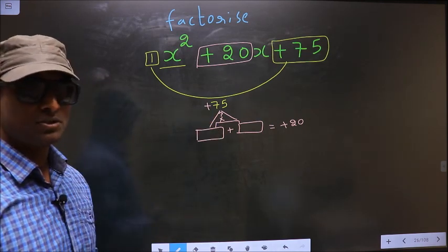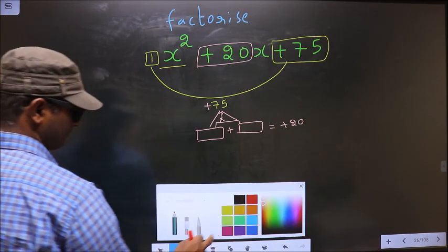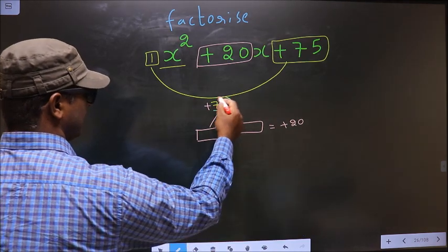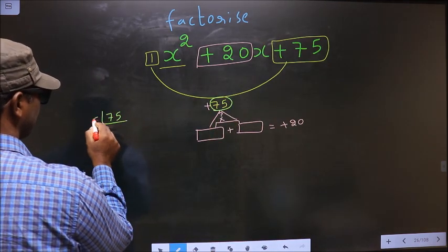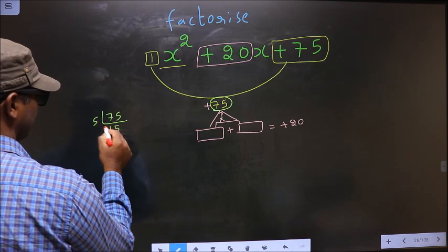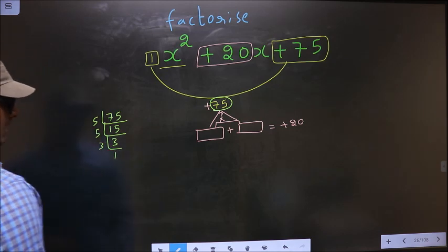To get those 2 numbers, we should take LCM of 75. So I start with 5. Once 5, 5s, again 5, 3. 3 and 1.